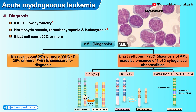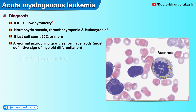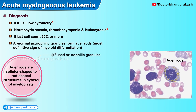The myeloblast can have 2 to 4 prominent nucleoli with granular cytoplasm containing azurophilic granules. Abnormal azurophilic granules form Auer rods, which is the most definitive sign of myeloid differentiation. Auer rods are splinter-shaped or rod-shaped structures in the cytosol of myeloblasts and are fused azurophilic granules. They are only present in the M2 and M3 subtypes of AML.